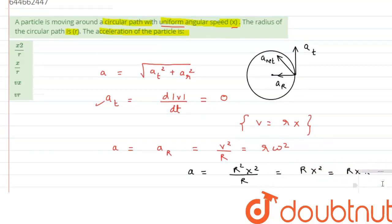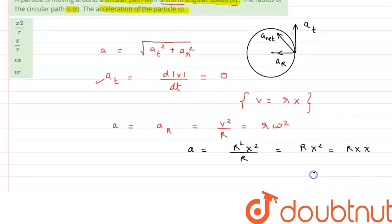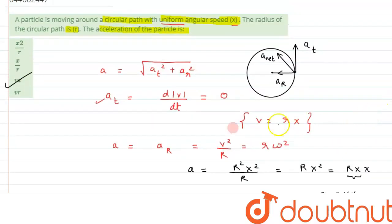Which further can be written as, we know rx is v, so instead of this term we can write it as v. Therefore we can get the acceleration value as v times x. So this is the answer to this question, matching with option c. I hope you have understood the concept, and thank you for watching.